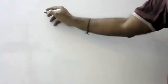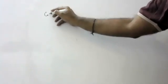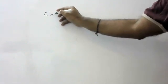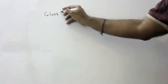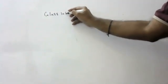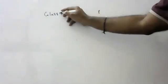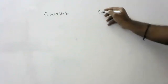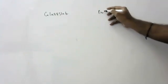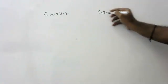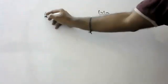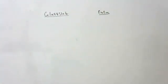Now we will discuss two important activities. One is the GLADSLAB (glass slab) activity and the other one is the PRISM activity. These are separate activities.